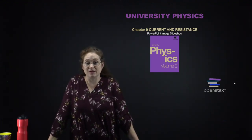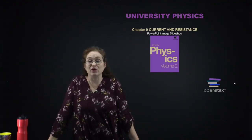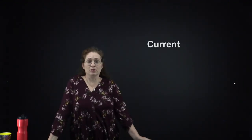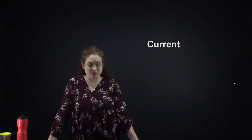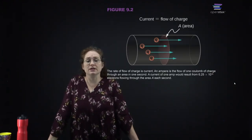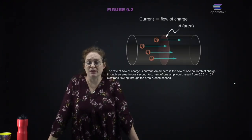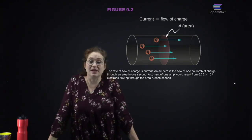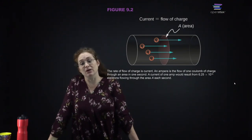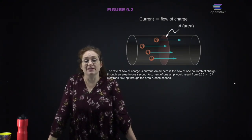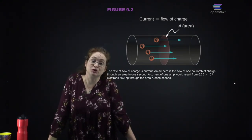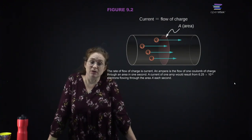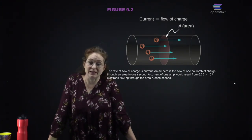We're going to continue our discussion by talking about current and resistance. We'll start by defining current. Current is the rate of flow of charge. One ampere is the SI unit of current, defined as one coulomb of charge traveling through a given area per second.